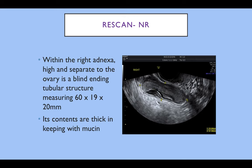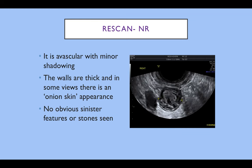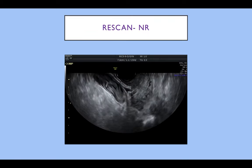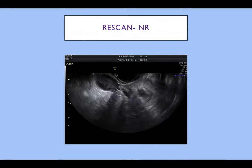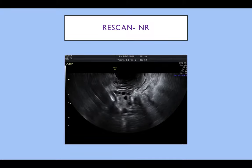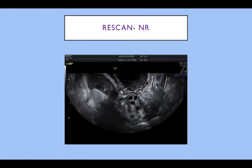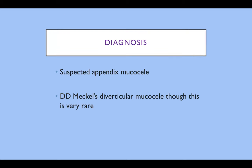The contents appeared thick and in keeping with mucin. It was avascular with some minor shadowing. The walls appeared thick and in some views there was an onion-skin appearance — almost like a layered appearance in the wall. There was no obvious sinister features or stones seen. In this video of the mass we can see a tubular, thick-walled structure with some mucinous contents within it, seen separately to the ovary and also separately to the uterus. The patient was completely asymptomatic and not tender at all. My suspected diagnosis was an appendix mucocele, with Meckel's diverticular mucocele as a differential.